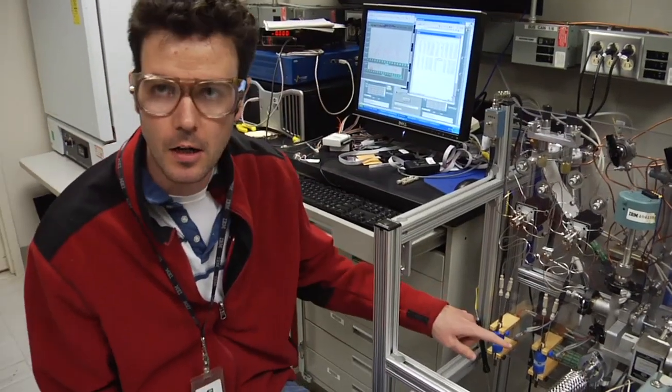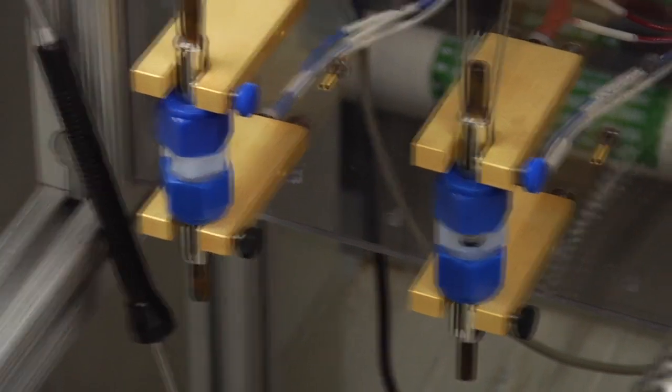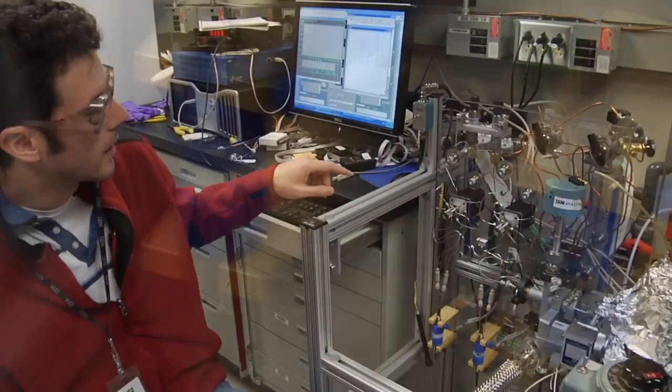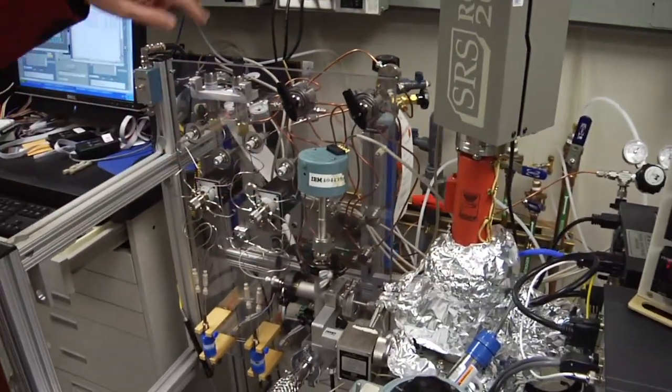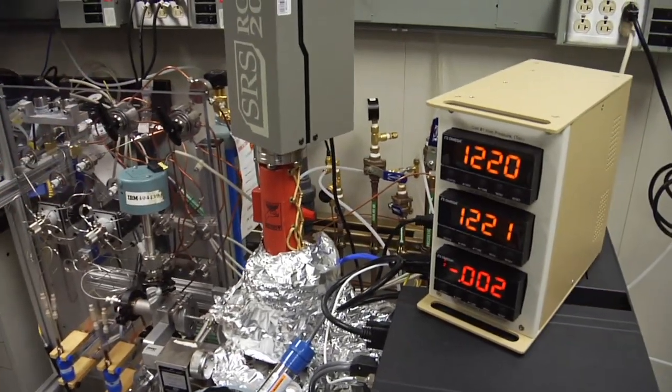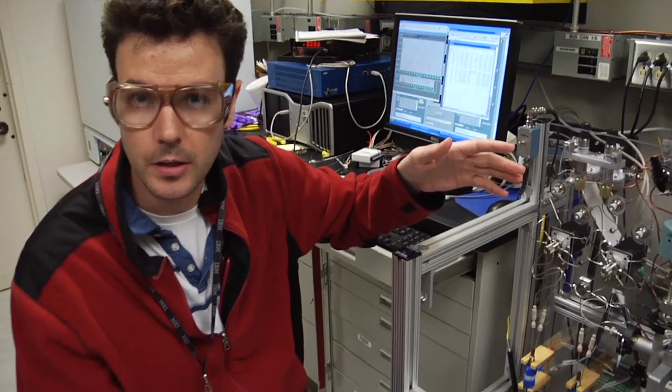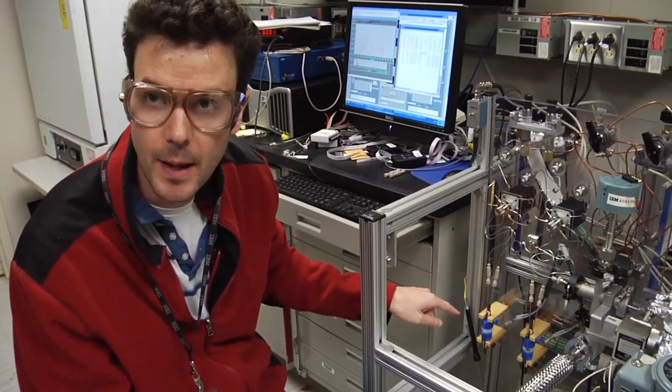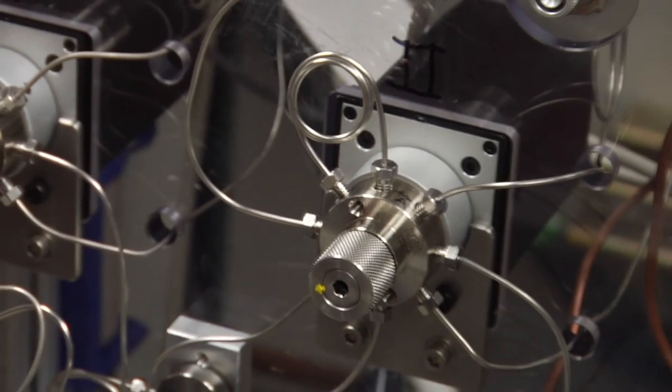So what we see right here are two batteries that are currently discharging on our DEMS setup here. What we can do is take gases which we have in these different lecture bottles in the back here. We can take any gas that we like. We have right now oxygen and argon hooked up to our system. And we can pass it through the headspace of our battery. And we can control precisely how much gas goes through the headspace of our battery.